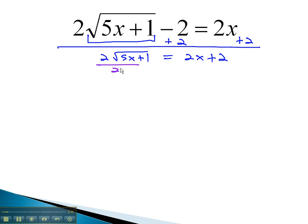Next, we get rid of the 2 in front by dividing each term by 2. This gives us the square root of 5x plus 1 equals x plus 1.